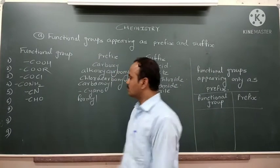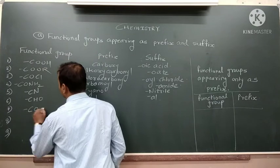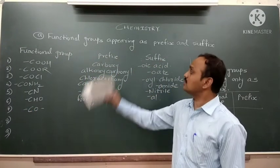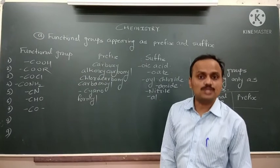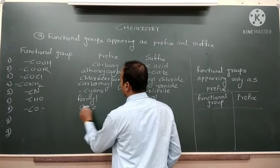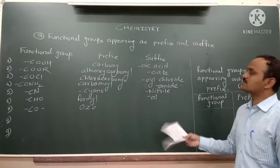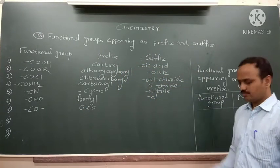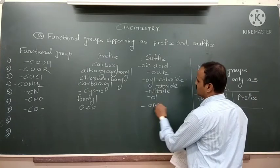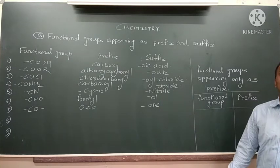Next is the ketone functional group, which contains a C=O. When ketone comes as a substituent, it is called 'oxo'. When it comes as a parent chain, then the suffix is '-one'. Propanone is another name of acetone.